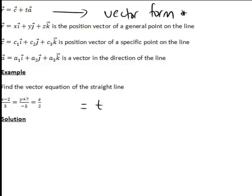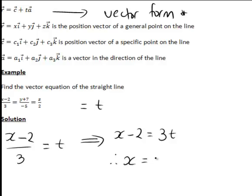In other words, the first part of those equations, x minus 2 divided by 3 equals t. We rearrange this to make x the subject. So x minus 2 equals 3t, multiplying both sides by 3, and therefore x is equal to 2 plus 3t.